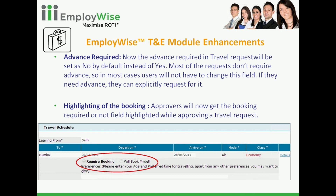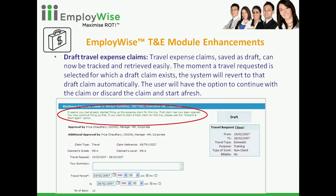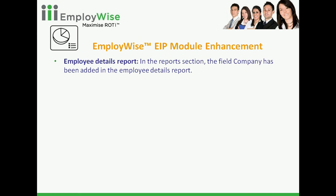We have made a small addition in the EIP module — the field 'employee's company' has been added to the employee details report. Thanks to our users who pointed out this missing field in this report.